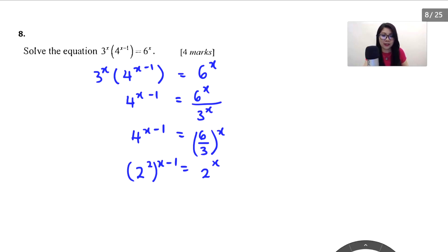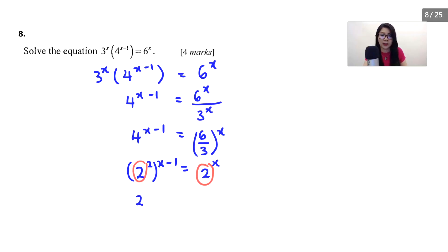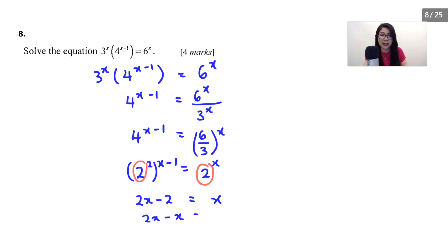Now both sides have base 2, so we can compare the powers. The power on the left is 2(x−1), giving 2x − 2 equals x. Grouping like terms: 2x minus x equals 2, therefore x equals 2. That's the answer.